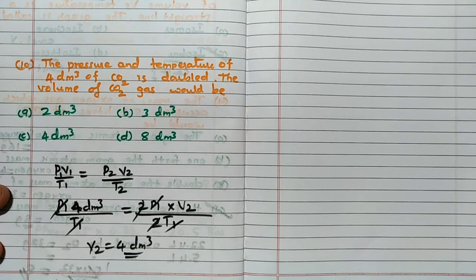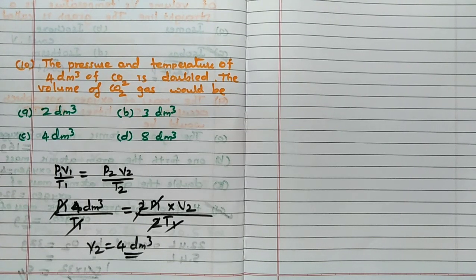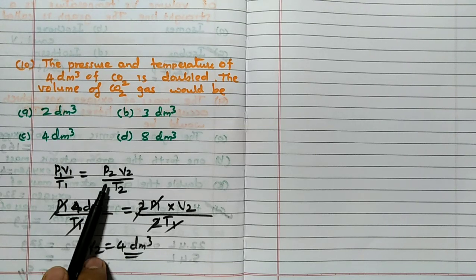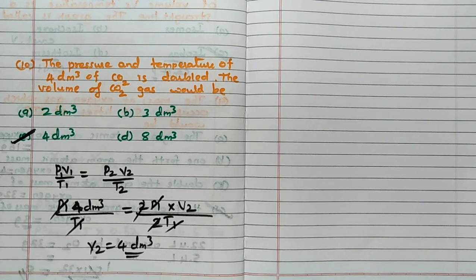Very simple question it is. But you have to - your basics should be very strong, this formula we have to use, we will get the answer. So the answer for this question is C, 4 dm³.